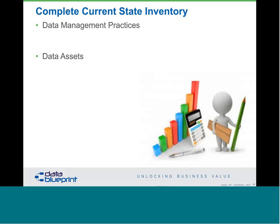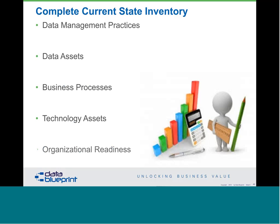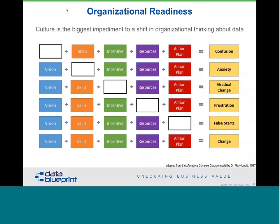We also need to get a sense of the data assets — that's an inventory problem. Are the businesses good at understanding business process architecture? What sort of technologies do they have currently? And we need to understand organizational readiness, which is actually one of the biggest challenges. We use an adaptation of Mary Libet's managing complex change model: if you have confusion, you probably have a great action plan and wonderful resources, but you're missing the vision. If you have the vision, incentive, resources, and action plan, but somebody doesn't have the right skills, you'll probably get anxiety.